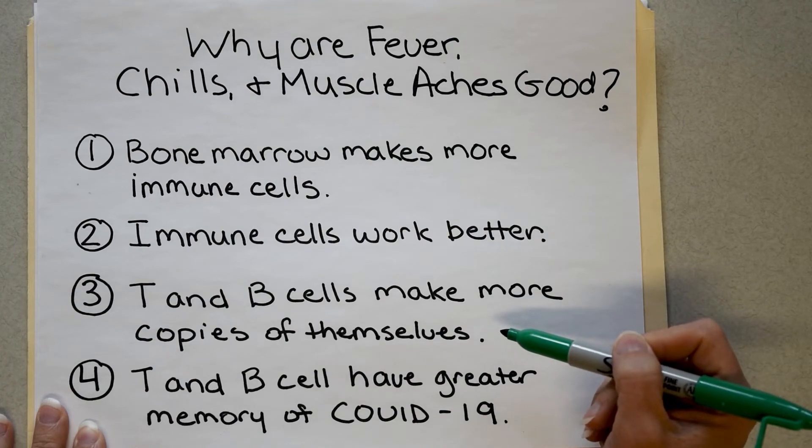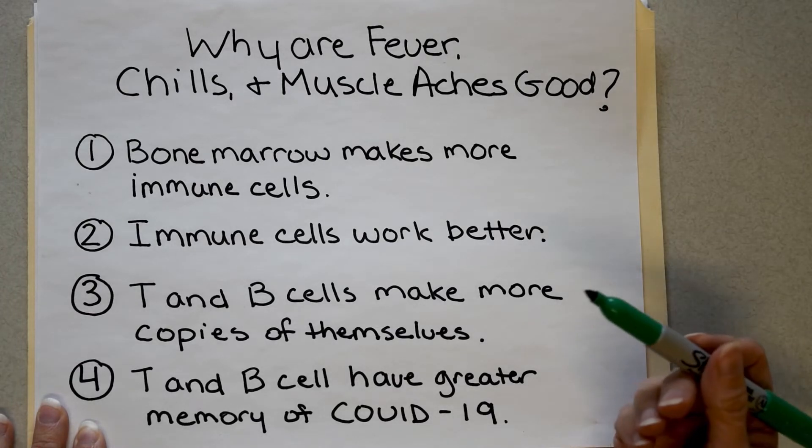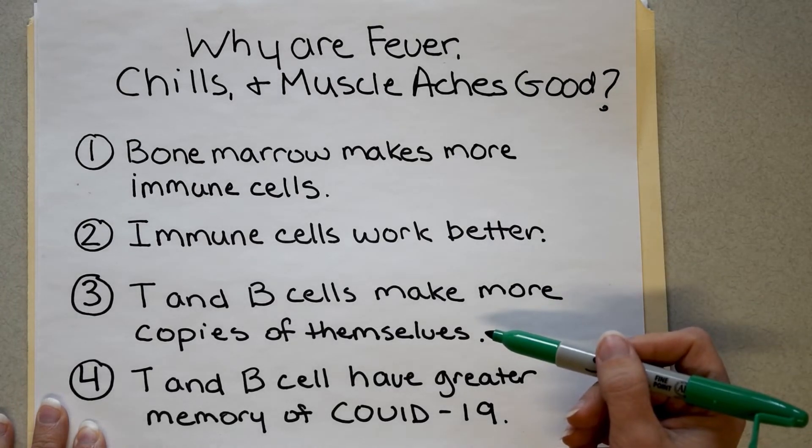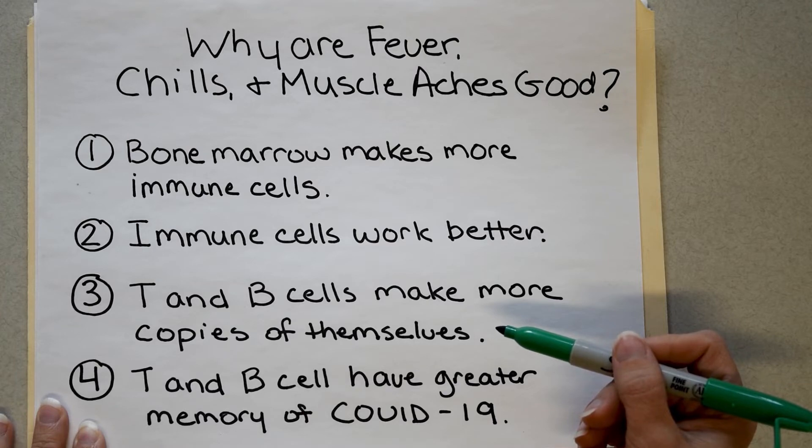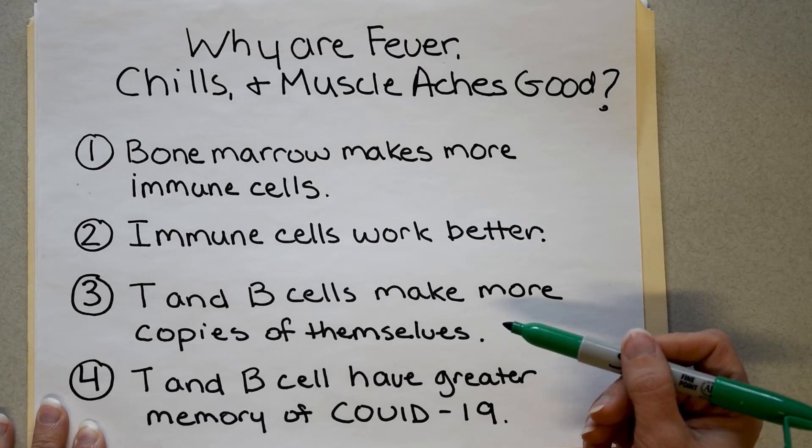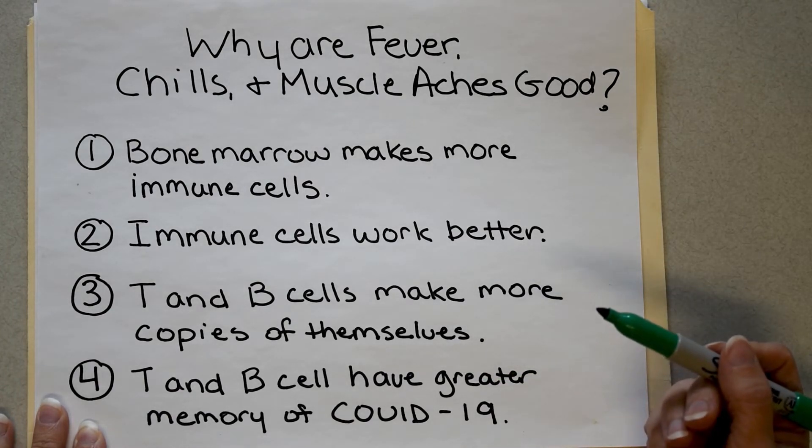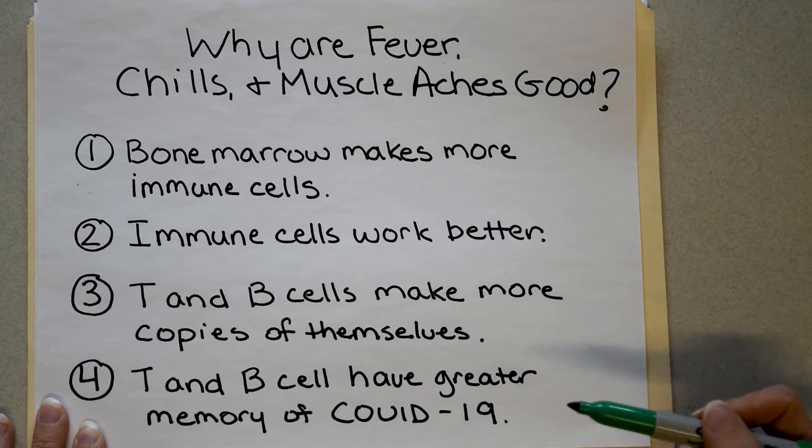T and B cells make more copies of themselves. So after the first vaccine, you had probably a good number of copies, perhaps in the hundreds to thousands. And now you probably have closer to 10,000 or more of the type of B and T cells that recognize COVID. And on top of that, it means you have more antibodies to bind up COVID before it ever accesses any of your cells. And then number four, B and T cells have greater memory of COVID-19. This is fantastic. This is essential.